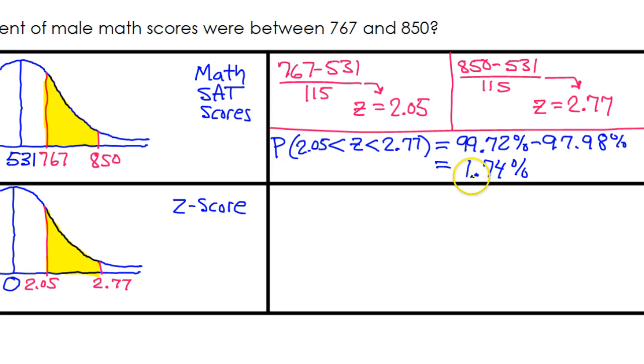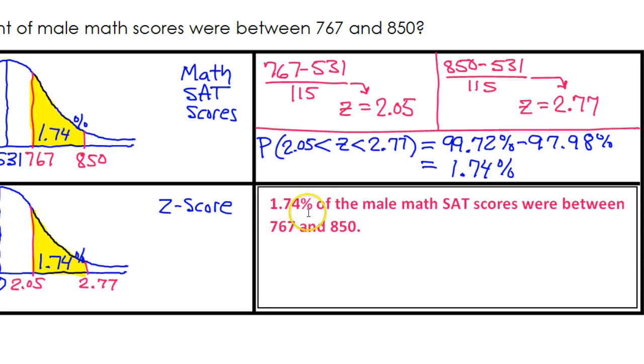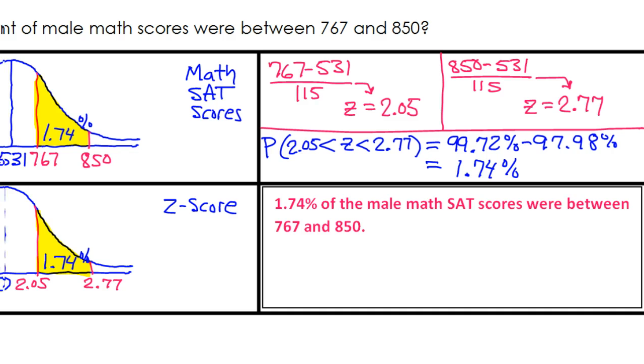Just subtract those and see what you get. I'm coming up with 1.74% of the people. So I'm going to record that on my graph, 1.74%. And finally record your final answer as a sentence. 1.74% of the male math SAT scores were between 767 and 850.